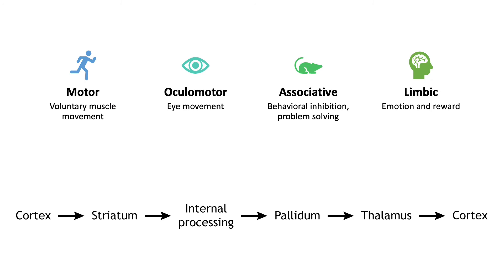There are multiple circuits that pass through the basal ganglia: the motor circuit, which we just described; the ocular motor circuit, which plays a role in eye movement; the associative circuit, which plays a role in executive functions like behavioral inhibition, preventing impulsive behaviors, planning and problem solving, and mediating socially appropriate behavior; and the limbic or emotional circuit, which plays a role in the processing of emotion and reward. Although the circuits each use different pathways within the basal ganglia, the general loop is the same: cortical input to the striatum leads to internal processing within the basal ganglia structures, and basal ganglia output projects from the pallidum to the thalamus, which then projects back to the cortex.